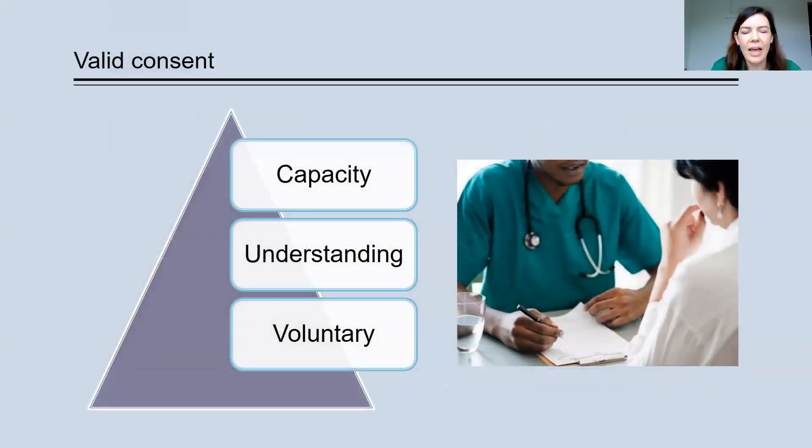Valid informed consent requires three things. It's not just enough to get consent, to get a signature on a piece of paper. That might mean that it looks like you have informed consent, but it won't necessarily qualify as valid consent. Valid consent requires that your participant has capacity to make that decision themselves, that they understand the research and that they're acting voluntarily.